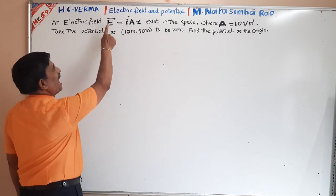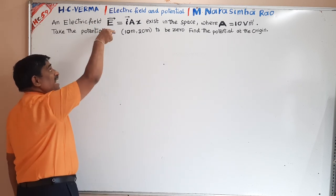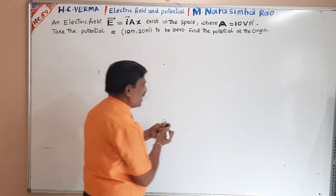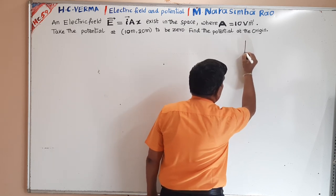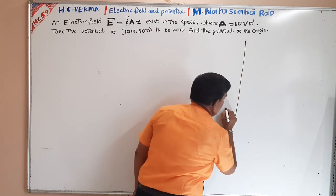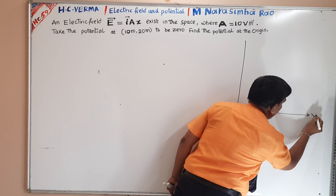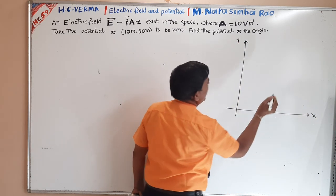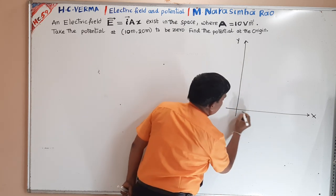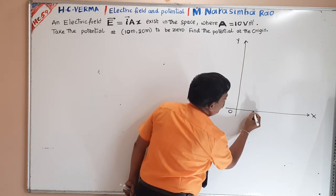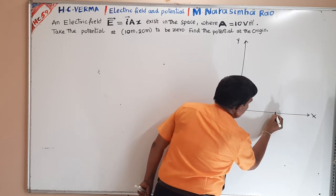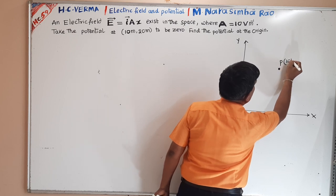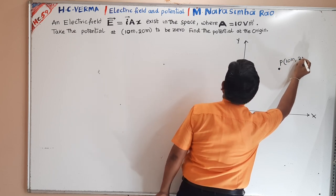In this problem, they have given the electric field, and that electric field is along the X axis. According to the given information, I am drawing the diagram. This is the X axis, and this is the Y axis. They have given one point — the point (10 meter, 20 meter).